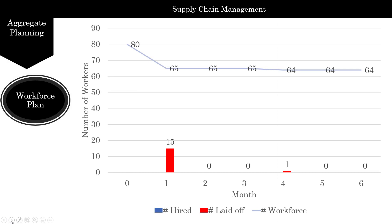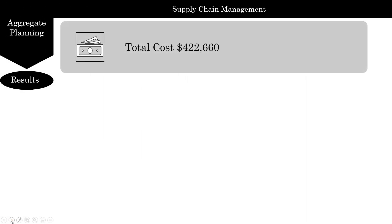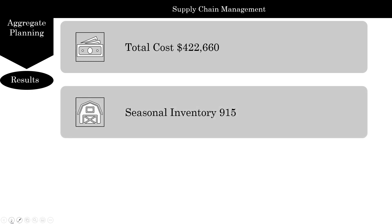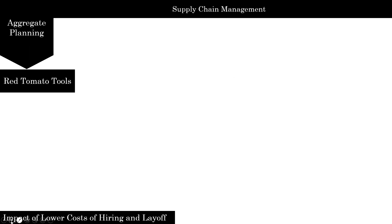We also showed the workforce plan, and here are the results. We calculated the total cost, the seasonal inventory, which is the average inventory and average flow time. So the question now is we want to look at a series of what we call what-if analysis. This is very common when you are presenting data to management, the solutions.